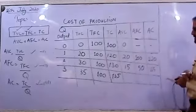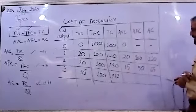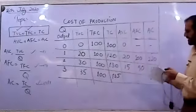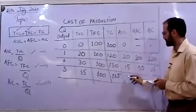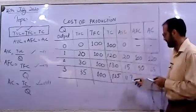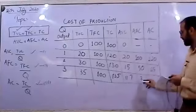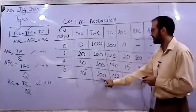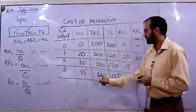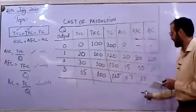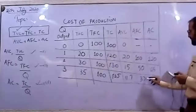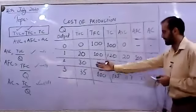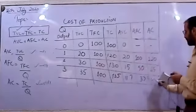For output 3: AVC = 35 ÷ 3 = approximately 11.7; AFC = 100 ÷ 3 = approximately 33; and AC = 135 ÷ 3 = 45.